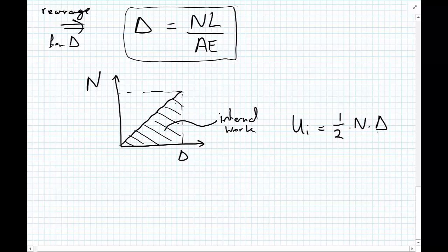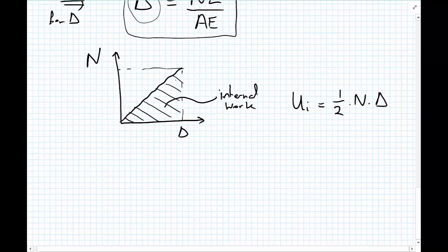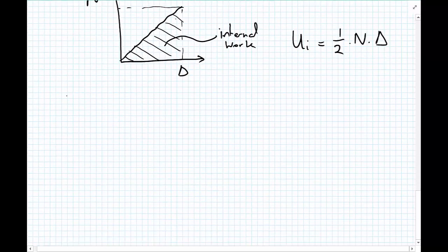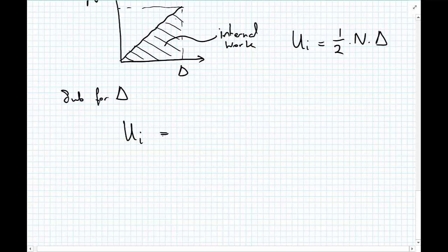And we can also take our result just above for delta and insert it into this equation. So substituting for delta now, we can say that U_i equals N squared L divided by 2AE.